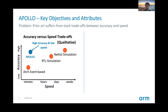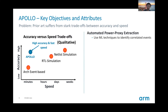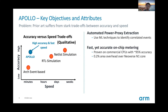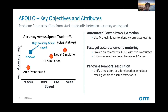What are the key differentiating attributes of Apollo? First, it does automated power proxy extraction. It uses data-driven techniques to automatically identify the power-correlated contributors in a design. This is design and microarchitecture agnostic, so in principle it scales and applies to all manners of compute solutions. Second, Apollo enables fast and accurate on-chip power monitoring, with per-cycle accuracy around 95%. The low-cost model can be synthesized into an on-chip power meter with only 0.2% area overhead over the Neoverse N1 CPU core. Third, Apollo supports per-cycle temporal resolution, enabling the scaling of power simulation, runtime dI/dt mitigation, and emulator integration, all with the same framework. Finally, we believe this methodology is extensible to higher abstraction simulations.